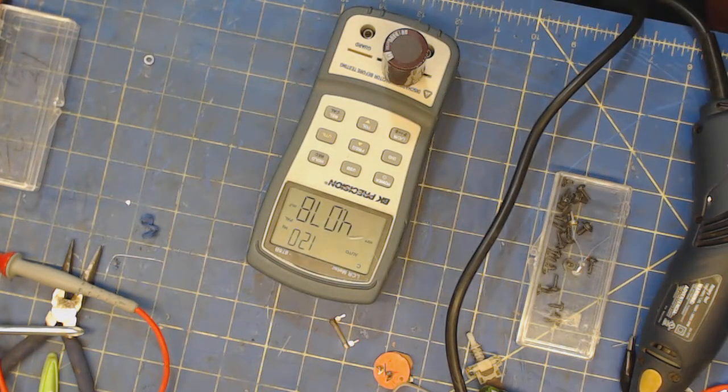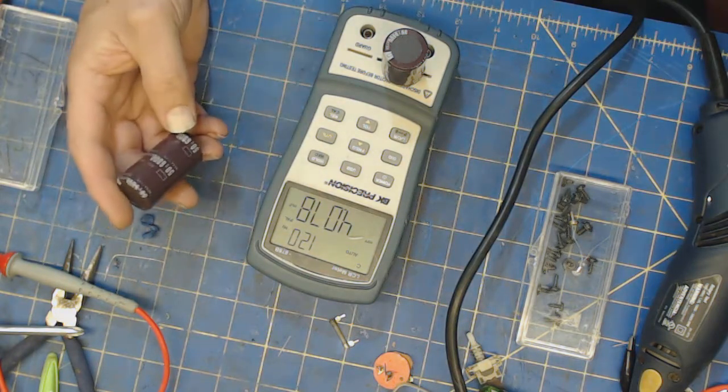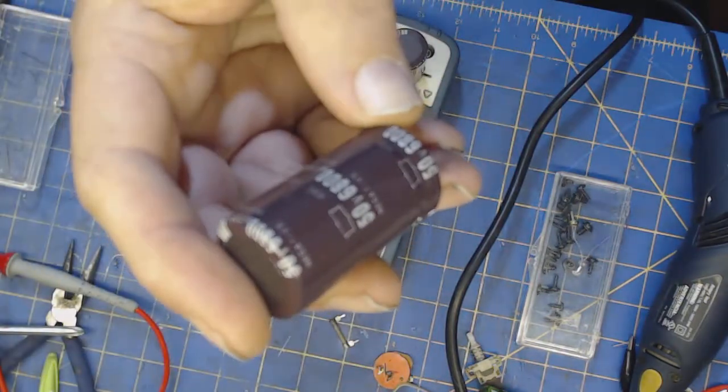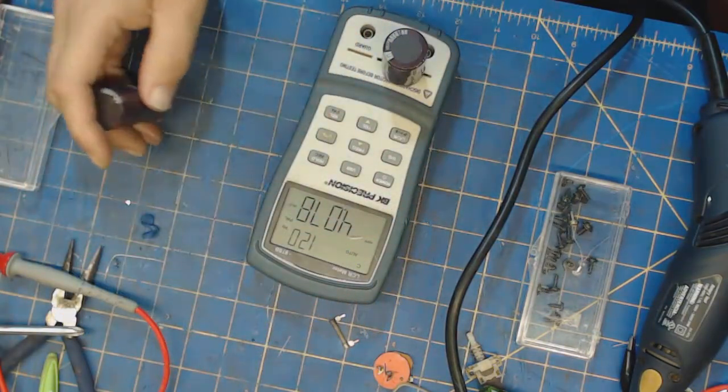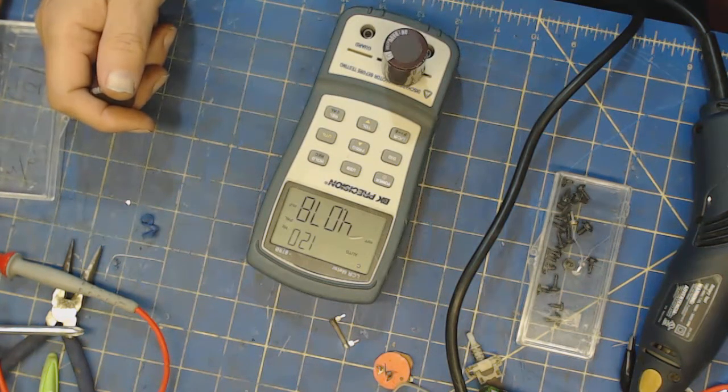Got to building the power supply and picked up these capacitors out of the kit. They're supposed to be 50 volts at 6,800 microfarads. Well, as you can see from the BK down there, it's about 4,000 microfarads.